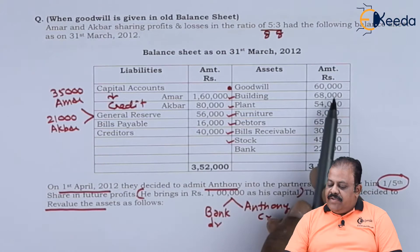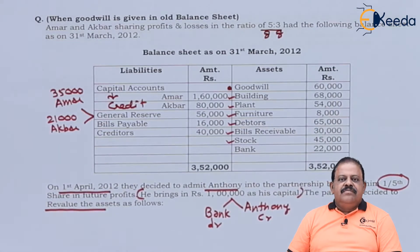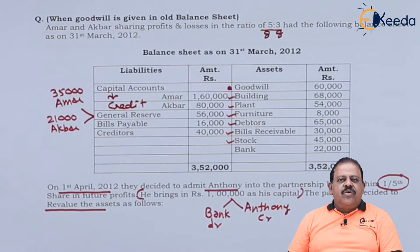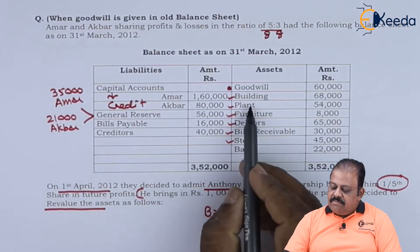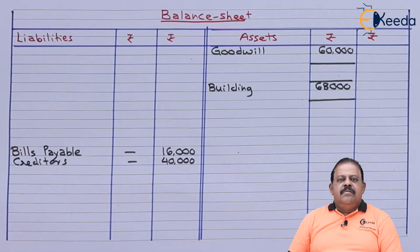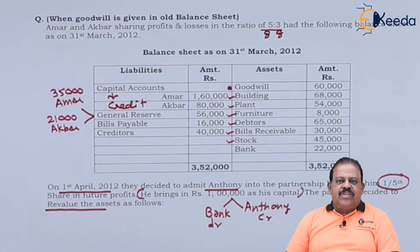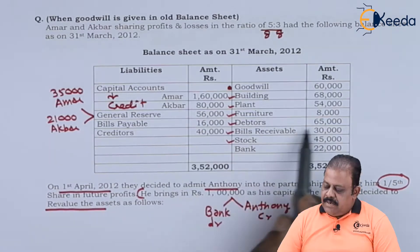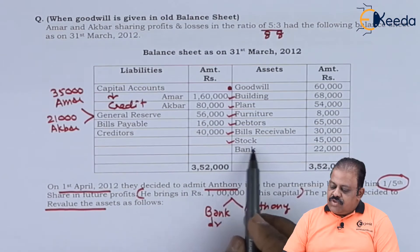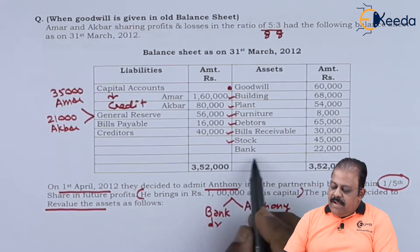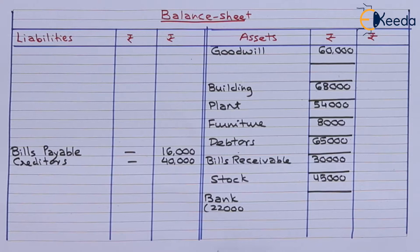On the asset side, we have goodwill 60,000. Goodwill is revalued and then written off, so there are two adjustments on goodwill. Next we have building — there is adjustment on building. Building 68,000, plant 54,000, furniture 8,000, debtors 65,000, bills receivable 30,000, stock 45,000. Bank 22,000 — the opening balance of bank is recorded here in bracket.